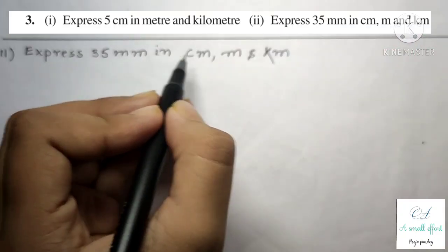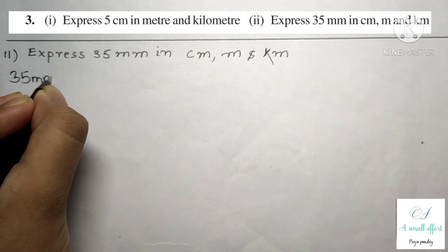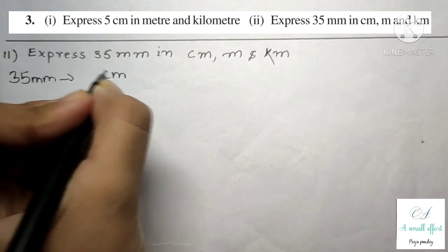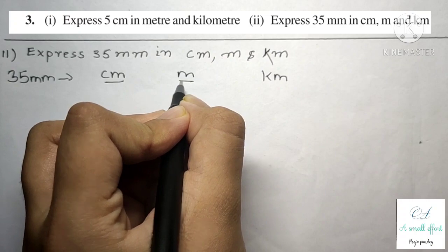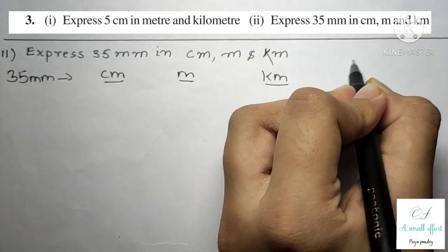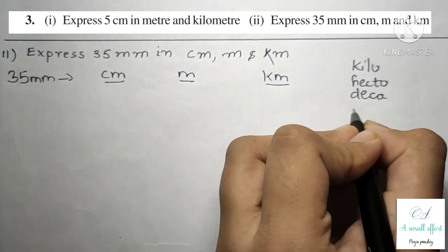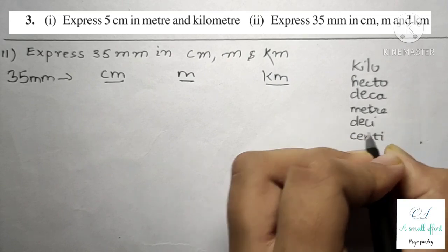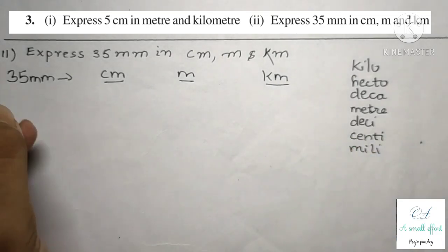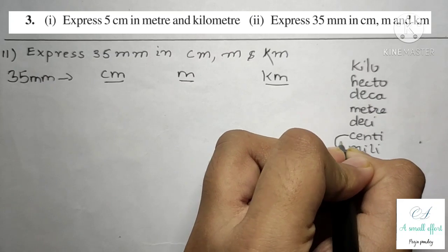Question number 3, second part: express 35 millimeter in centimeter, meter, and kilometer. We write the table: kilo, hecto, deca, meter, decimeter, centi, millimeter. Now 35 millimeter into centimeter — millimeter is here and centimeter is here, so one step up, and that is 10.